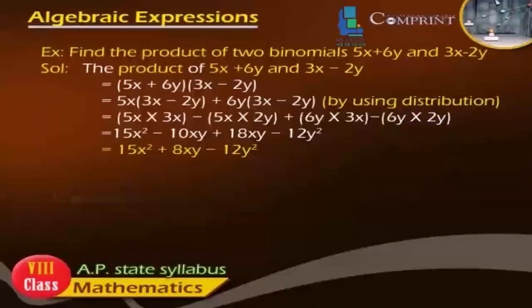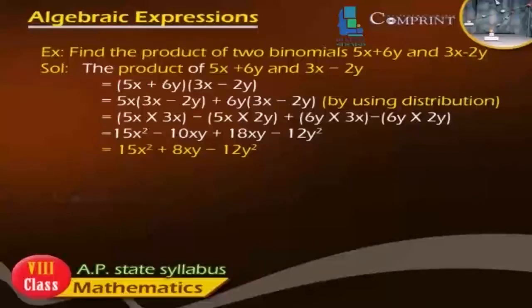Example: Find the product of two binomials (5x plus 6y) and (3x minus 2y). Solution: Using distribution, (5x plus 6y)(3x minus 2y) equals 5x × 3x minus 5x × 2y plus 6y × 3x minus 6y × 2y, which equals 15x² plus 8xy minus 12y².